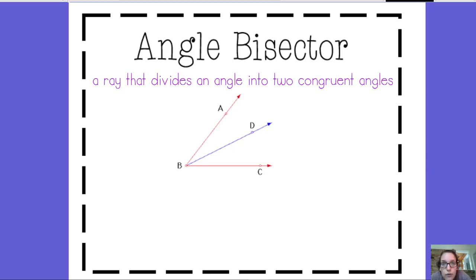So an angle bisector - we talked about the word bisect. That means to cut into two congruent pieces. So an angle bisector is something that's going to cut an angle into two congruent angles. So an angle bisector is a ray. So in our picture, it's this blue ray, ray BD.